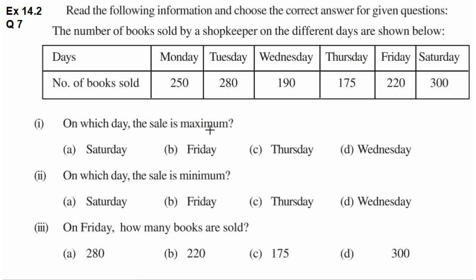First question hai: on which day the sale is maximum? Kaun se day pe shopkeeper ne maximum number of books sell ki hai? Yahaan per hum dekhte hai ki biggest number kaun sa mentioned hai. Yahaan per hai 250, yahaan per hai 280, yahaan per 190, yahaan per 175, yahaan per 220, yahaan per 300. Biggest number 300 hai — 300 books Saturday ko sell hoi hai. A option mein mentioned hai Saturday, so A is the correct option.